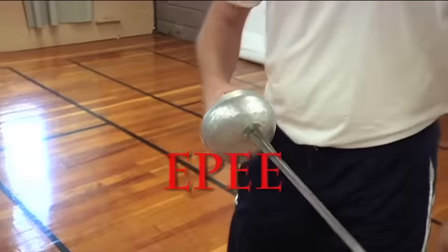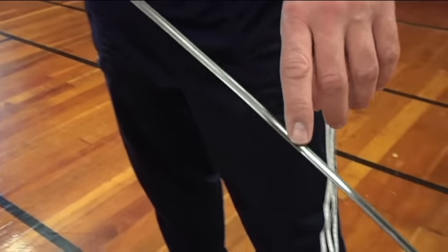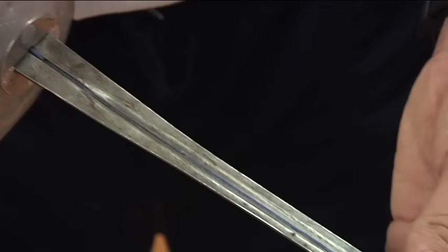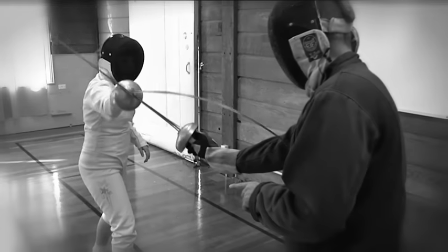The next weapon is the epee. The blade of the epee is a little bit thicker and wider and is actually triangular in shape. This makes it just a little bit more stiff than the foil blade.